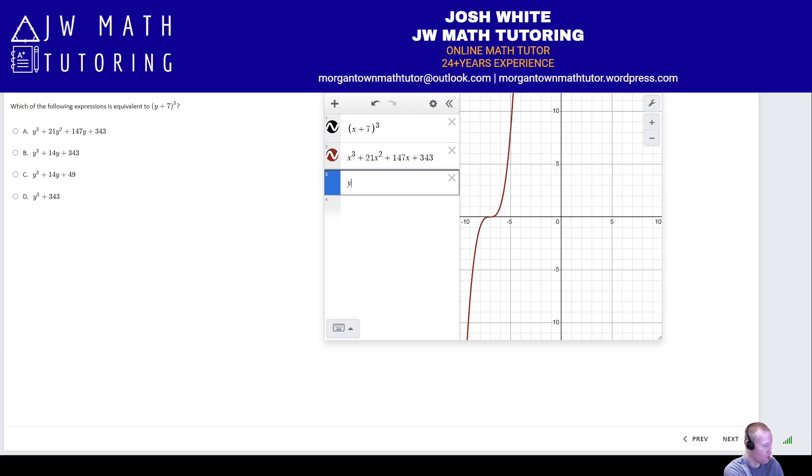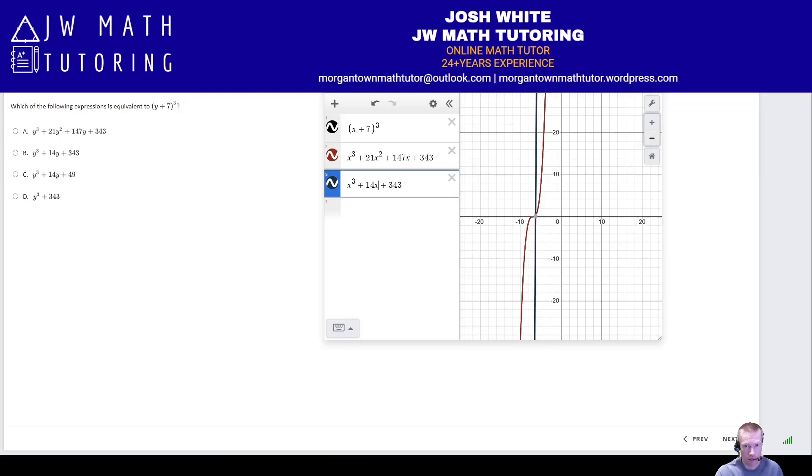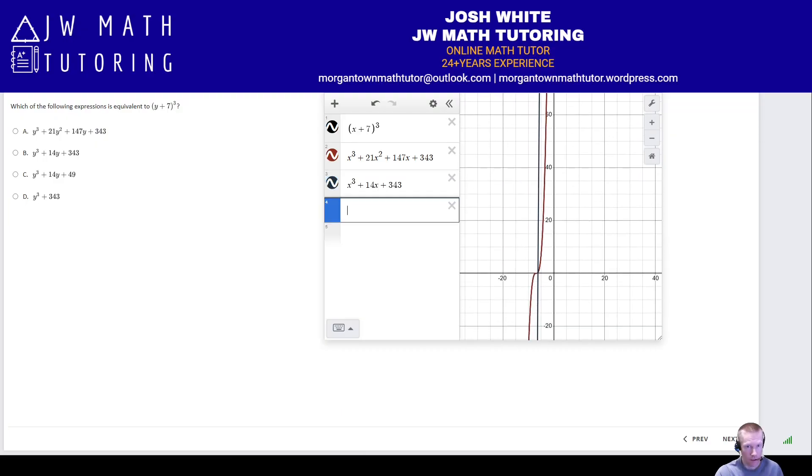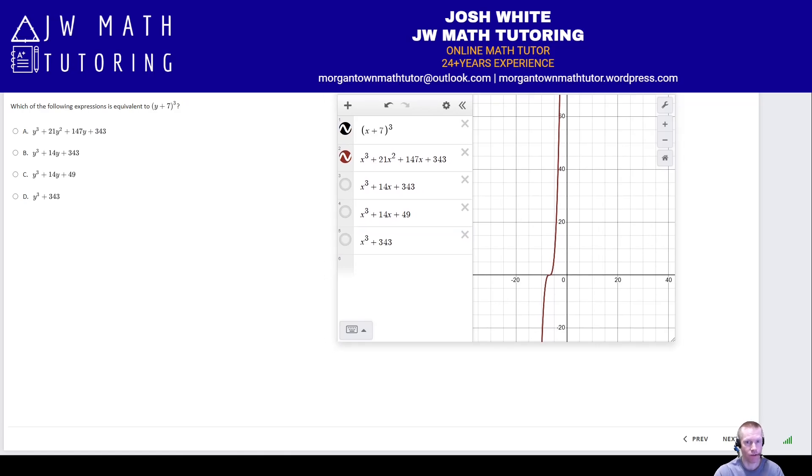Now, I will show you just to confirm that the other answers are not correct. Again, remember, I got to change everything to x. All right, so there we go. Notice, this is not correct. If you look at this, of course, I'm just going to take these two off. Notice this is not correct. It does not overlap the original. 43. Okay, take this one off. And again, same thing. So you can clearly see the first one is the one that directly overlaps it. That's all you need to do when you are matching equivalent expressions.